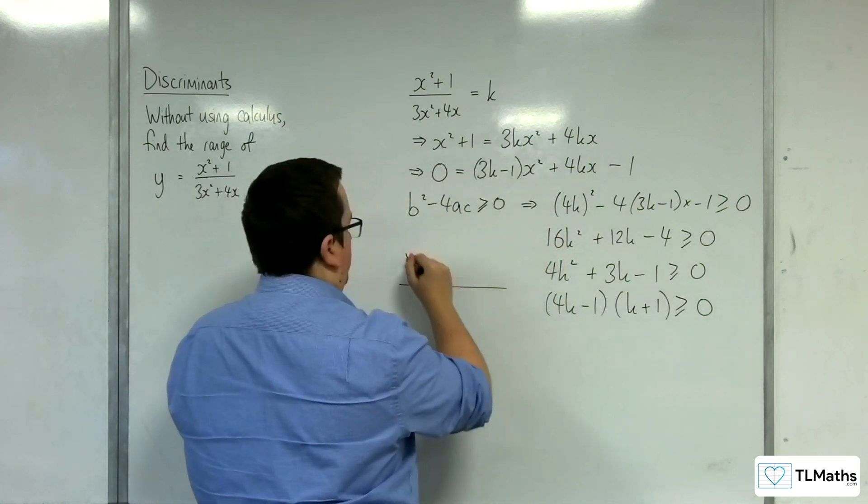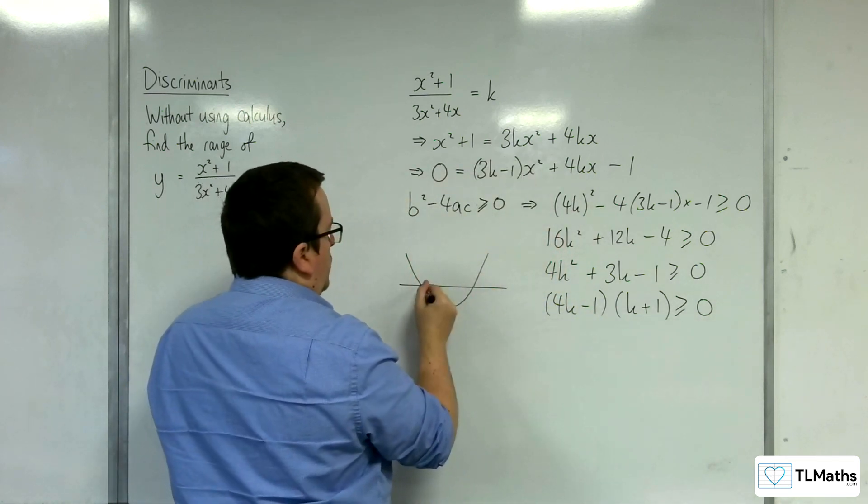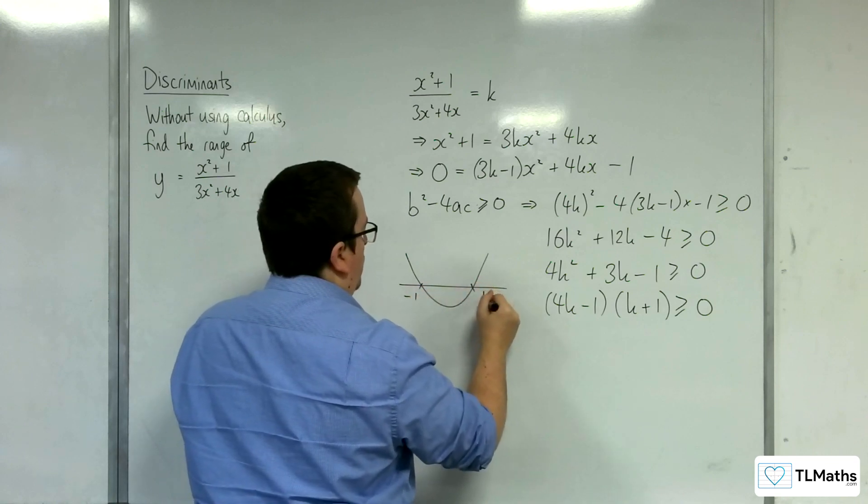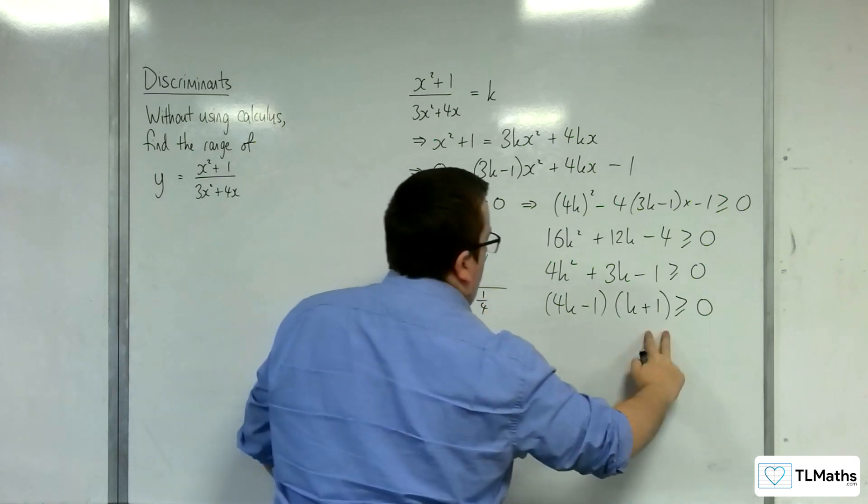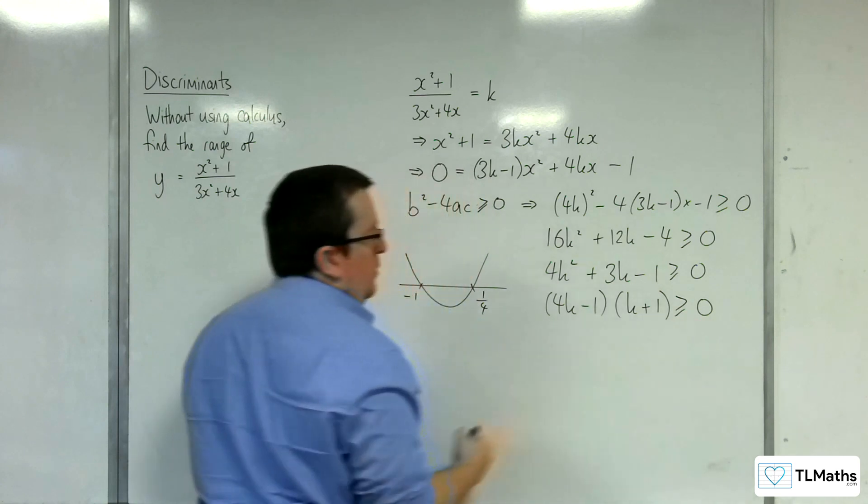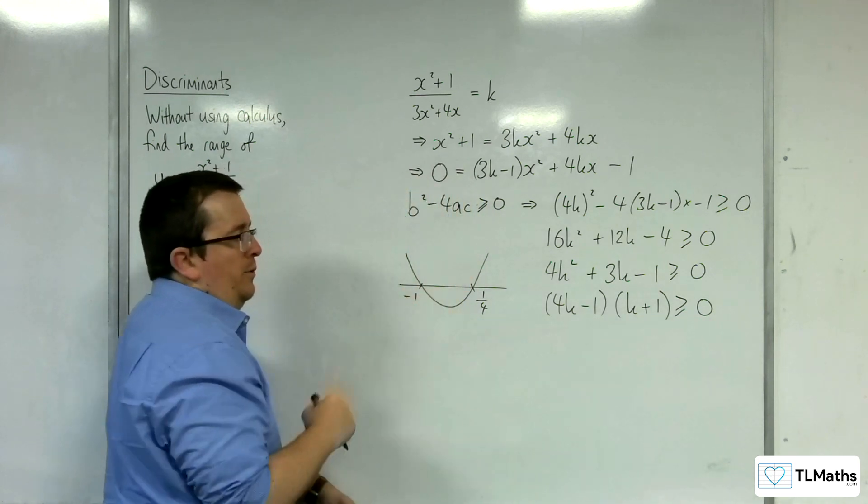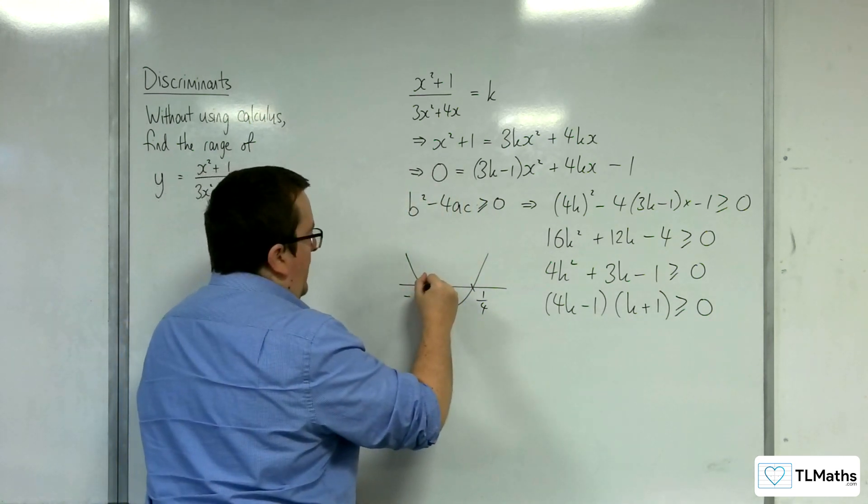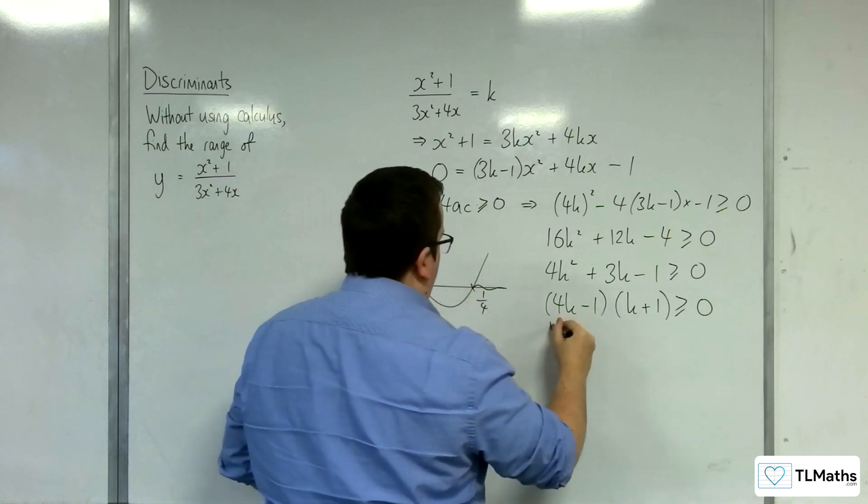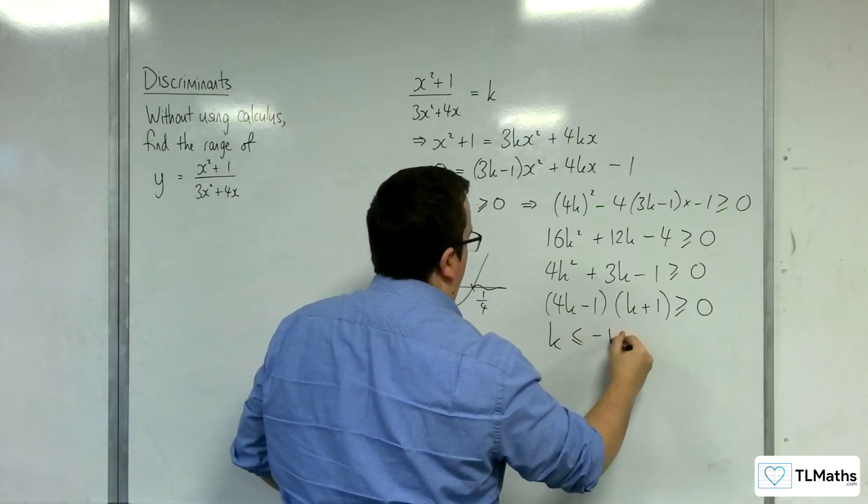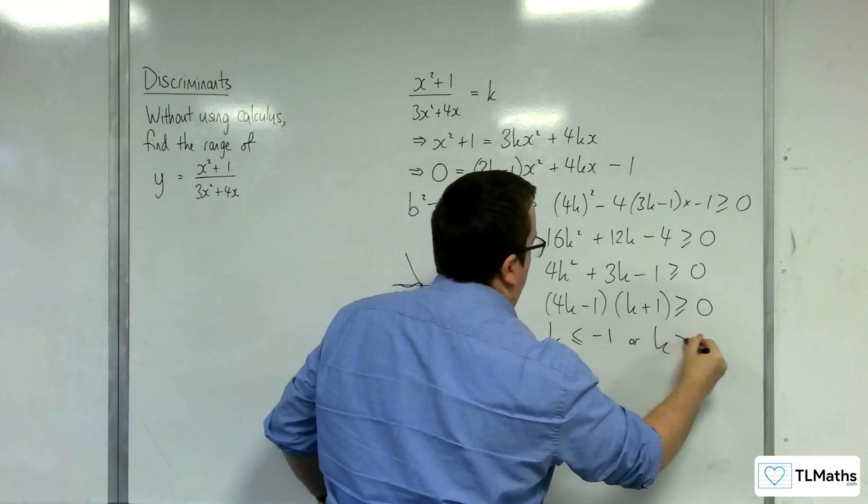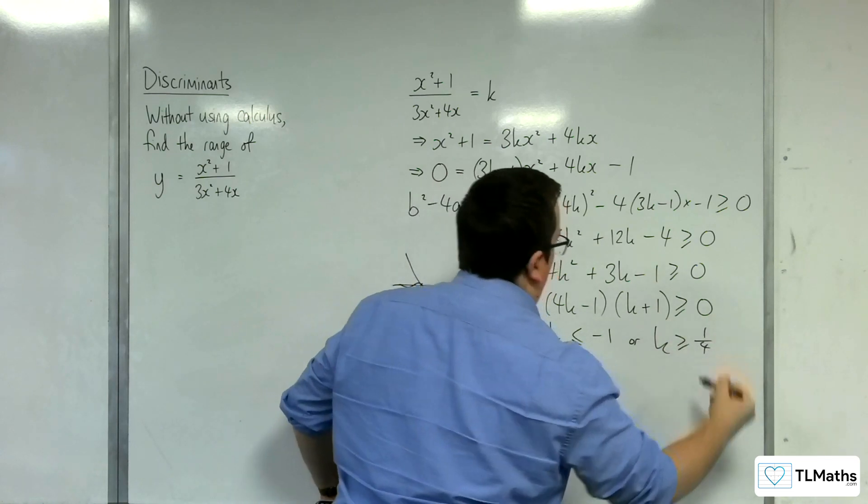Now, a quick little sketch of a parabola crossing through at minus 1 and a quarter. Where is the parabola above or equal to 0, above or equal to the x-axis? And so that would be there and there. So when k is less than or equal to minus 1, or k is greater than or equal to 1 quarter.